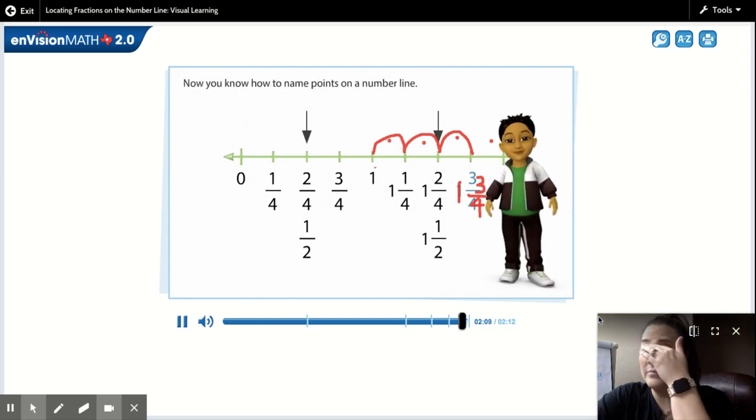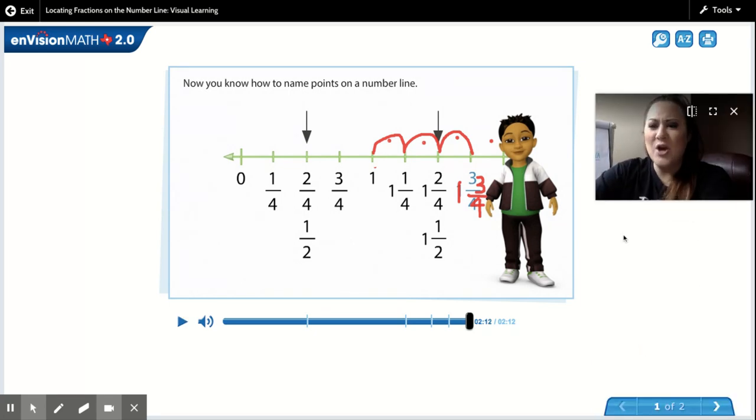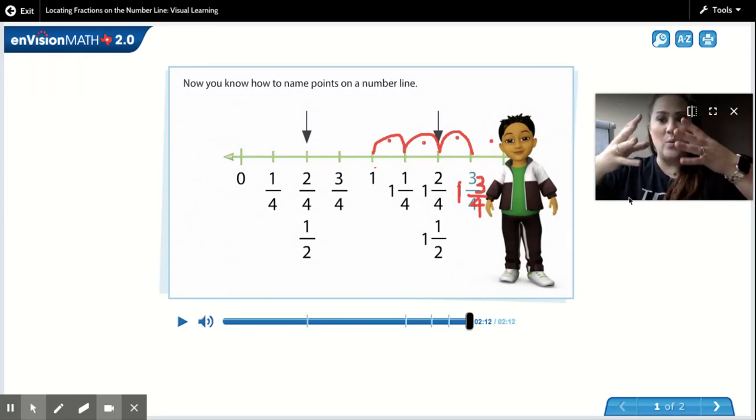Now you know how to name points on a number line. All right, guys. So I hope that you're not overthinking it because this is not that hard. We are just simply adding a whole number in front of the fraction now, which is dependent upon where we are in the number line.